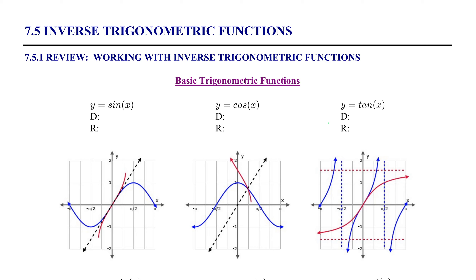For sine of x, we consider the portion of the graph between x equals negative pi over 2 and x equals pi over 2. On this portion, the range exhibited is negative 1 to 1, so all possible range values are contained within this snippet of the domain. The restricted domain is negative pi over 2 to pi over 2, and the range is still negative 1 to 1.